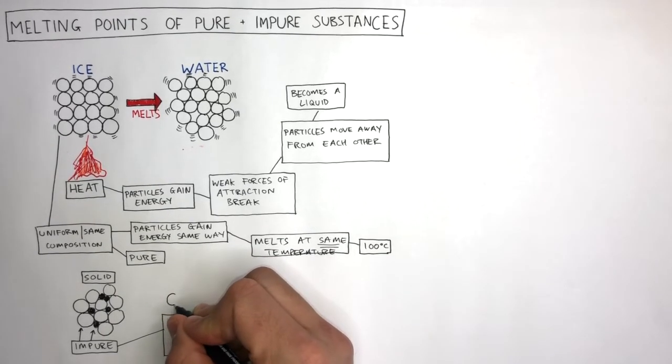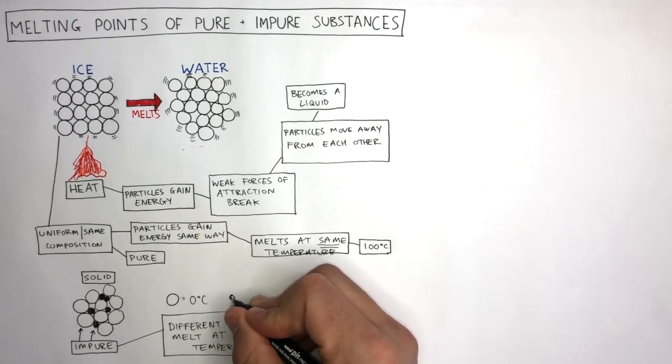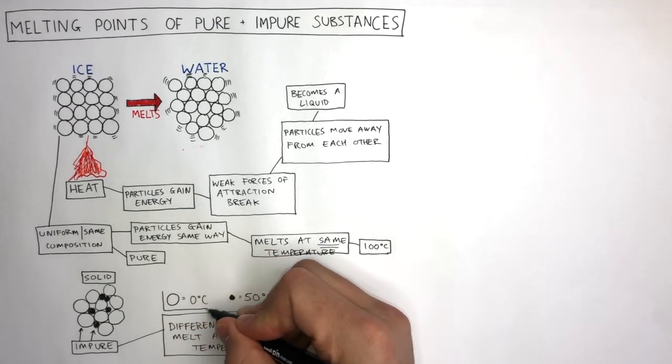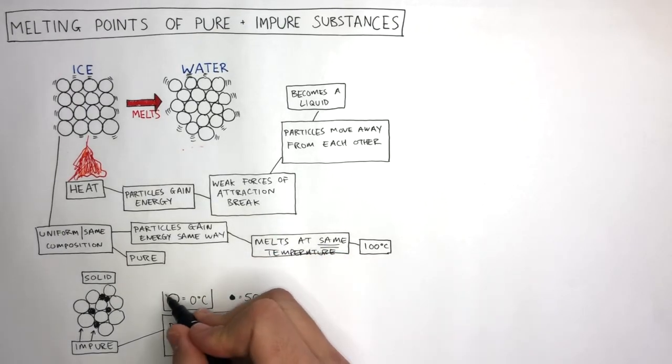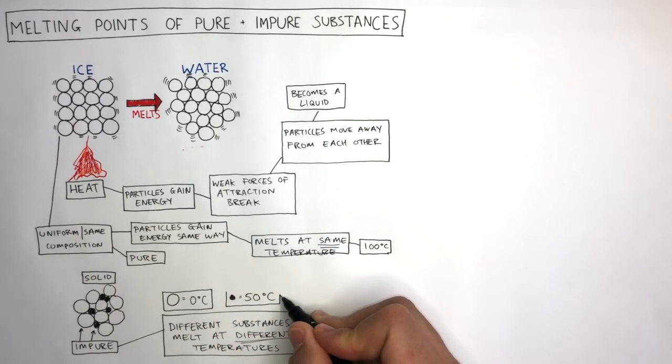In this example, the white circle melts at 0 degrees C, whereas the black circle melts at 50 degrees C. So an impure substance does not melt at one single temperature like a pure substance does. It melts over a range of temperatures because of the different melting points.